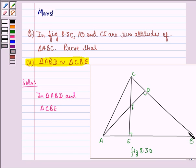First of all, we see that angle B is common in both the triangles. So, first thing is, angle B is equal to angle B because that is a common angle in both the triangles.